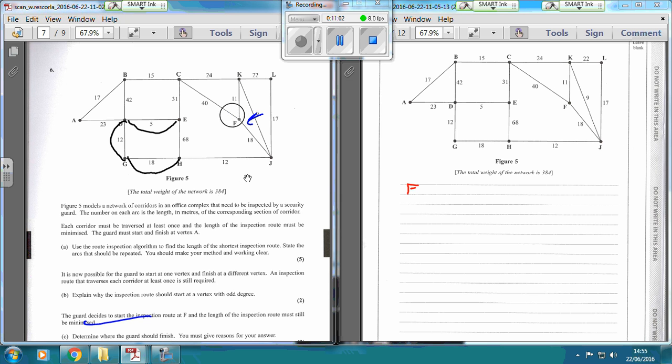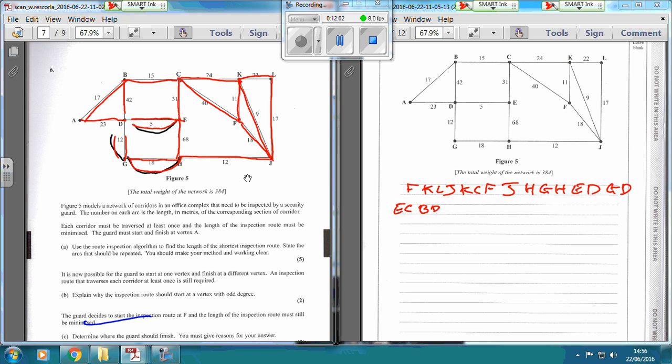So it's then completely up to you which route you choose, but you've got to start at F and then end at B. And the way I do this is I actually draw on this graph here. So F, K, L, J, F, K, L, J, K, C, F, J - that's that part of the graph done. J, H, G, H, E, D, G, D, E, C, E, C, D, B, A, B, D, A, B.